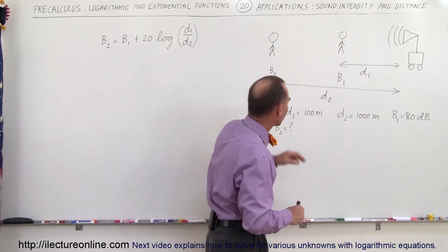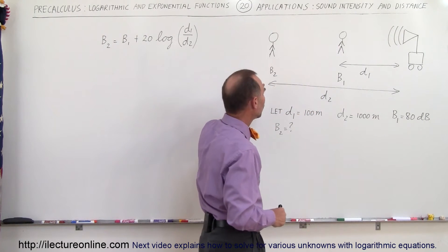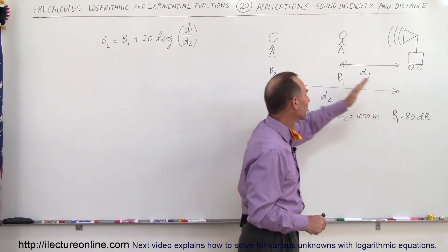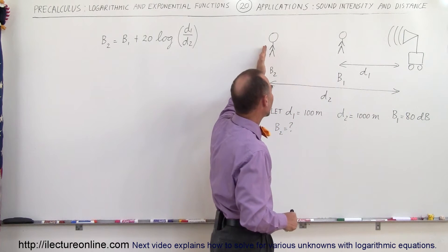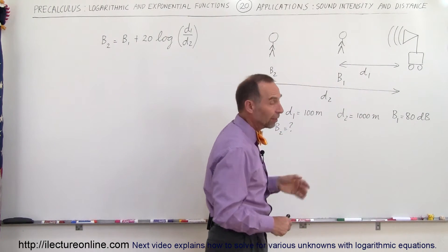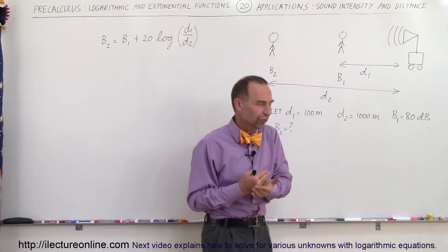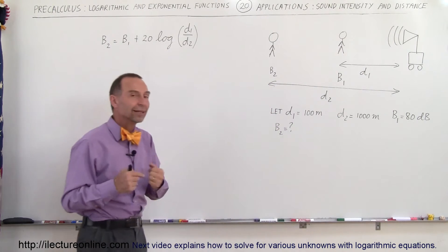Now what would a second person, right here, who's now a thousand meters away from the sound source, what would be the sound intensity for that person? It'll obviously be less because that person is farther away. The question is how do you calculate that?